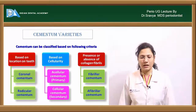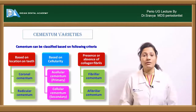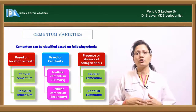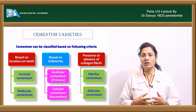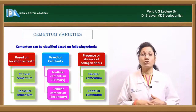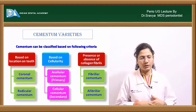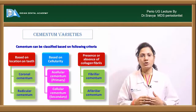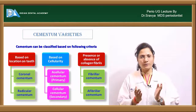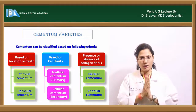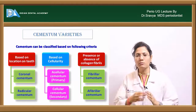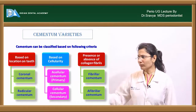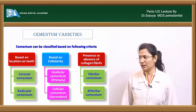Cementum can be classified according to three different systems. Based on location, you have coronal cementum — present on the coronal half of the root — and radicular cementum towards the apical portion.